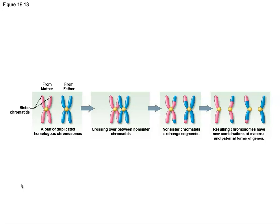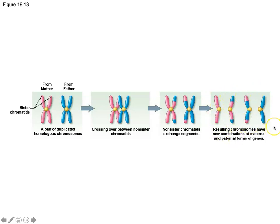Here is an example of what that crossing over event looks like. We start with a pair of duplicated homologous chromosomes, synapse at prophase I, and just start swapping DNA. This also means that sister chromatids are no longer identical. When we enter meiosis II, we do not have identical sister chromatids — we started with identical ones, but once we undergo this DNA exchange, they are no longer identical. This is why every single haploid cell that comes out of meiosis is going to be completely genetically unique.